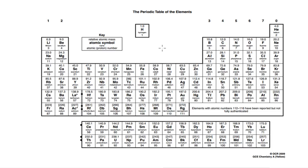In my last video about redox reactions, I talked about the idea that oxidation is the loss of electrons and reduction is the gain of electrons. Looking at this periodic table, we have metals mainly towards the left and non-metals mainly towards the right. Non-metals tend to be more electronegative whereas metals tend to be less electronegative. Because of this, when redox reactions occur, metals tend to lose electrons and be oxidized, whereas non-metals tend to gain electrons and be reduced.